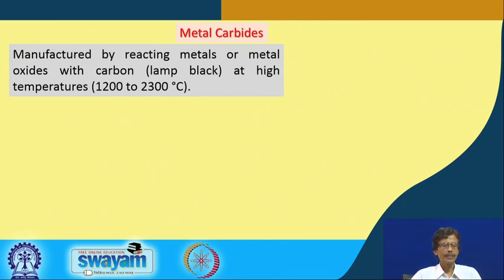Metals or metal oxides from natural sources — that is, directly from ores — can be used with some preliminary purification for reaction with carbon. At high temperatures of 1200 to 2300°C, the corresponding carbide is obtained.